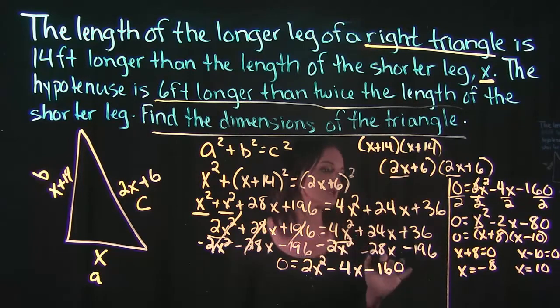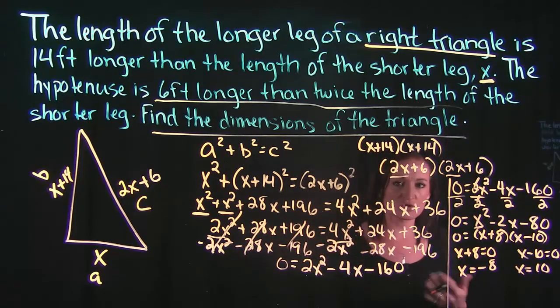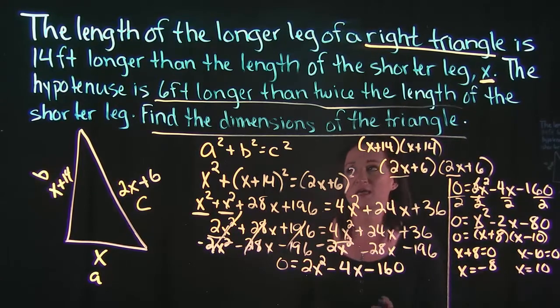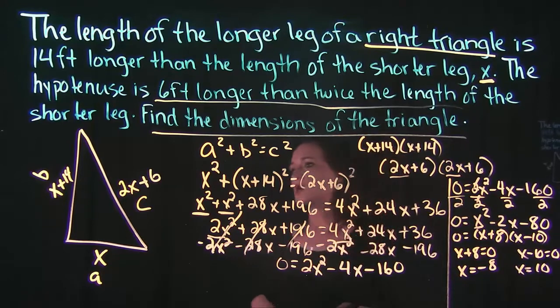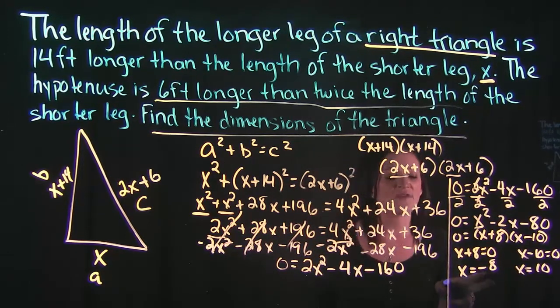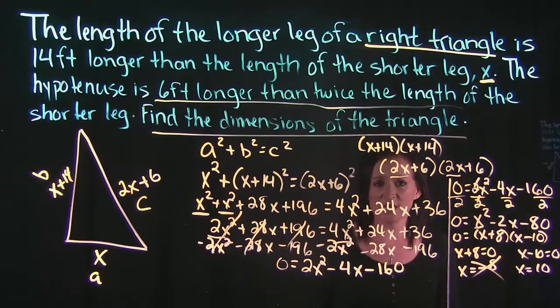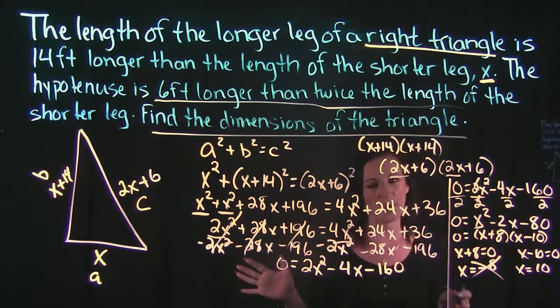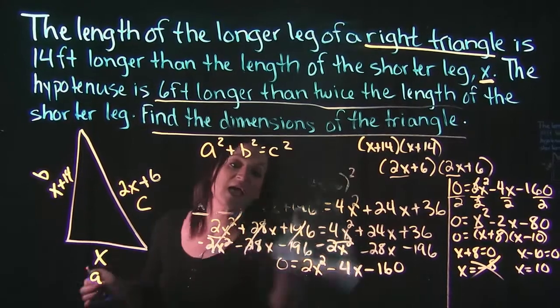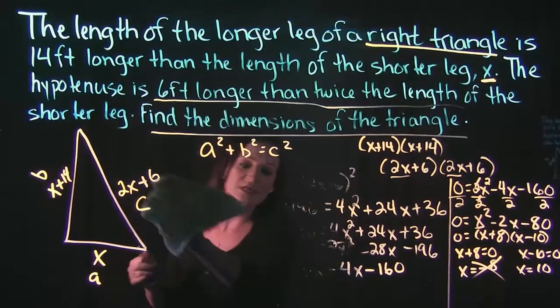An important thing to remember here is we're working an actual geometry problem. Okay so these numbers actually signify something in the real world. We're talking about lengths. So we're looking at negative 8 feet or 10 feet. There's no such thing as negative 8 feet and anytime you get a negative answer in these kind of problems you're automatically going to throw it out because we can't use it. But the x equals 10 we're definitely going to use that.